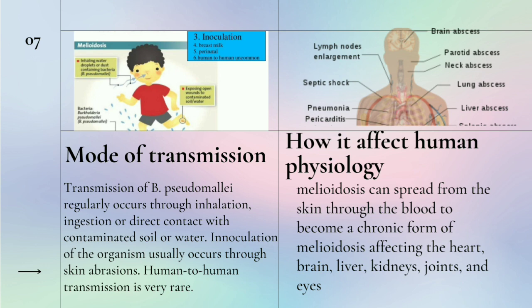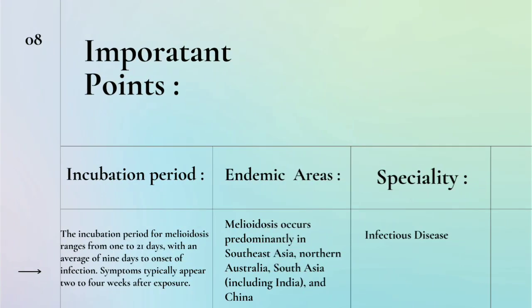Maliyae disease spreads from skin through blood to become a chronic form of Maliyae disease. It affects the heart, brain, liver, kidneys, joints and eyes. The incubation period ranges from 0 to 21 days with an average of 9 days onset of infection, and symptoms may appear in 2 to 4 weeks. Endemic areas include Southeast Asia, Northern Australia, and South Asia including India and China. The specialty is infectious disease.